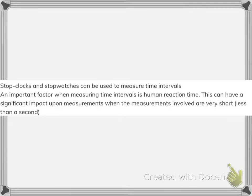If you want to measure time intervals, then you could use stop clocks or stopwatches. Human reaction time is very important because if the measurement involved is very short, it will be very difficult to record accurately. It can have a significant impact upon the measurement, so the measurements will have differences if there's a difference in human reaction time.